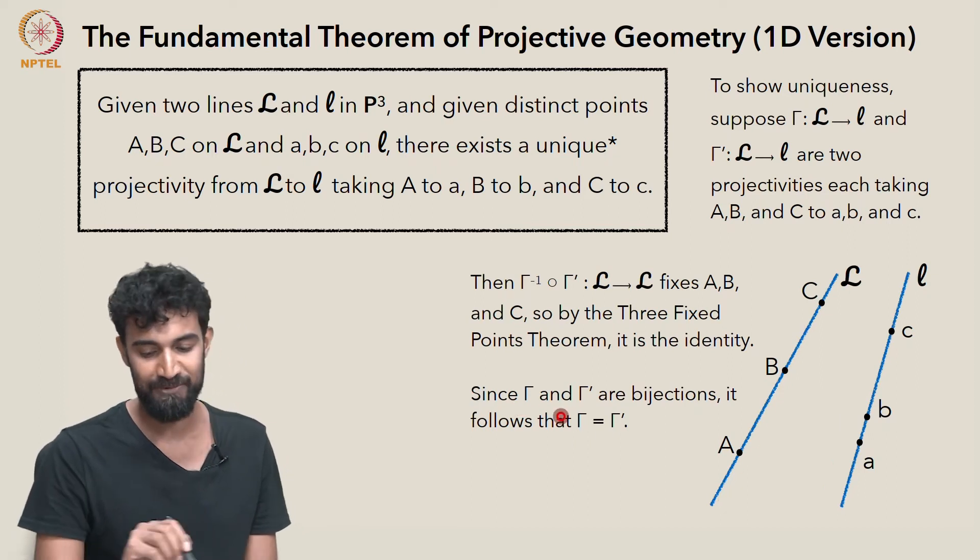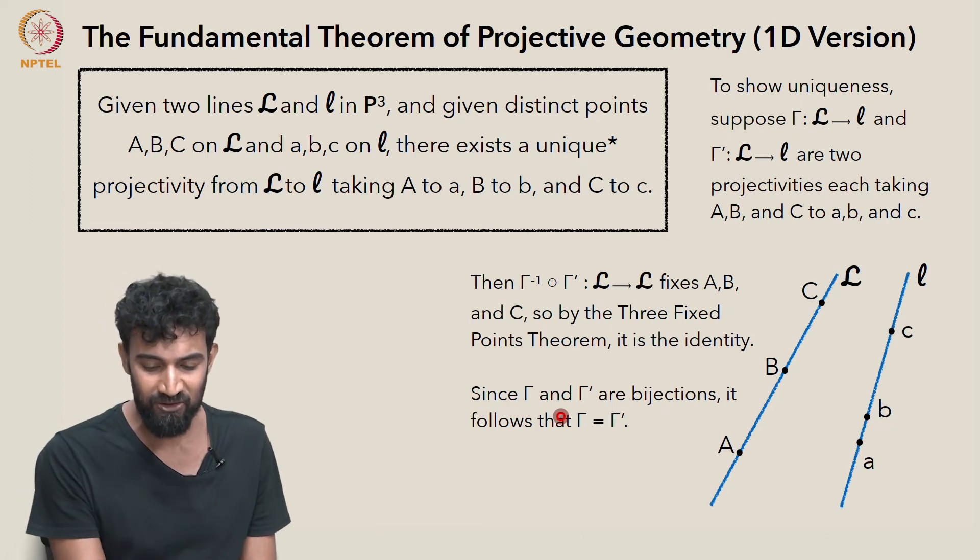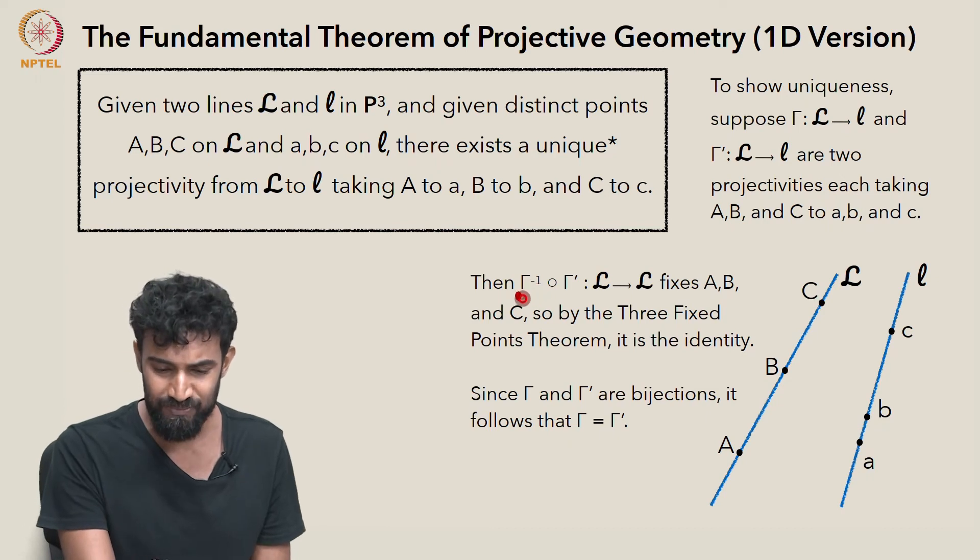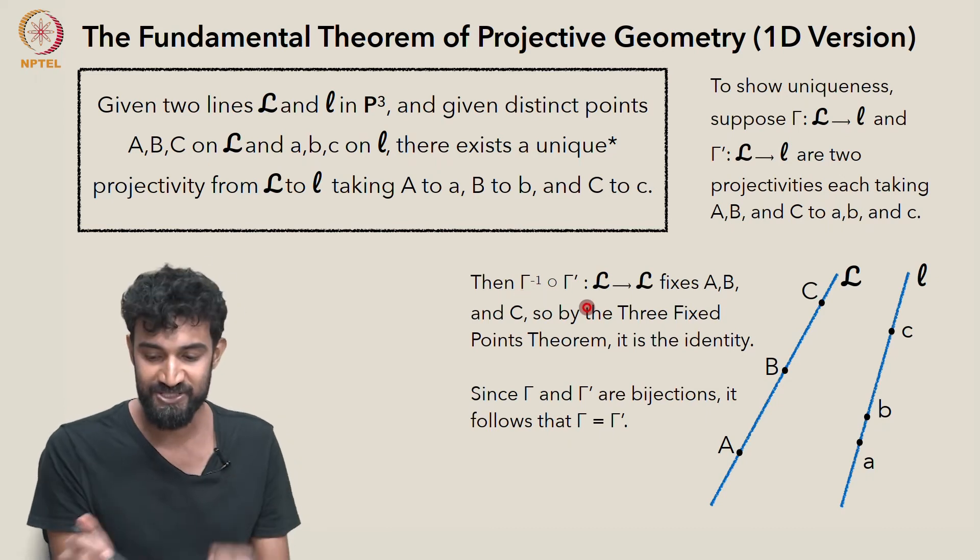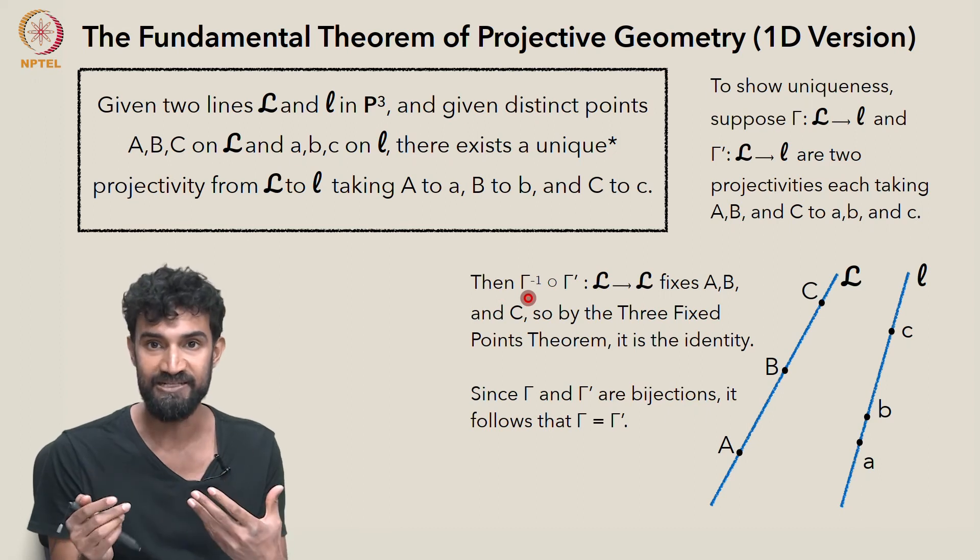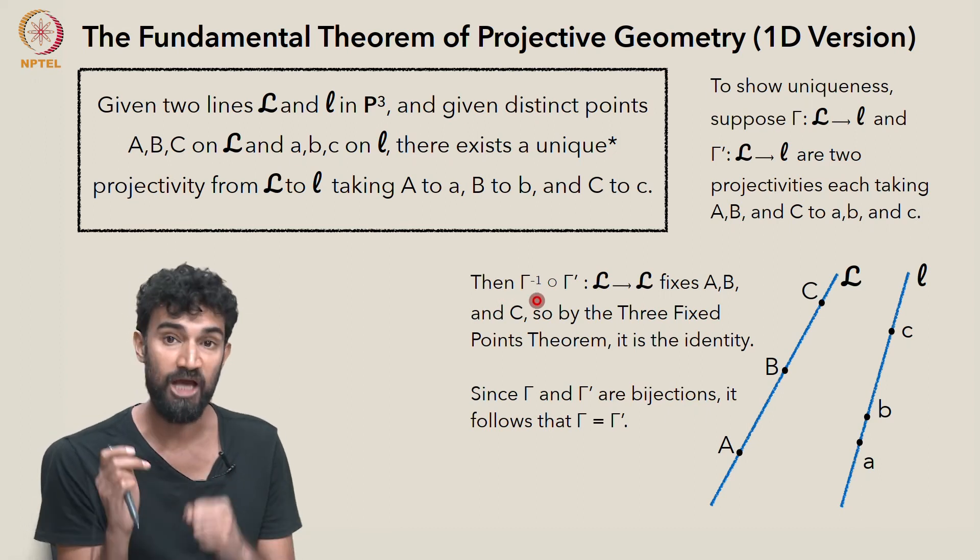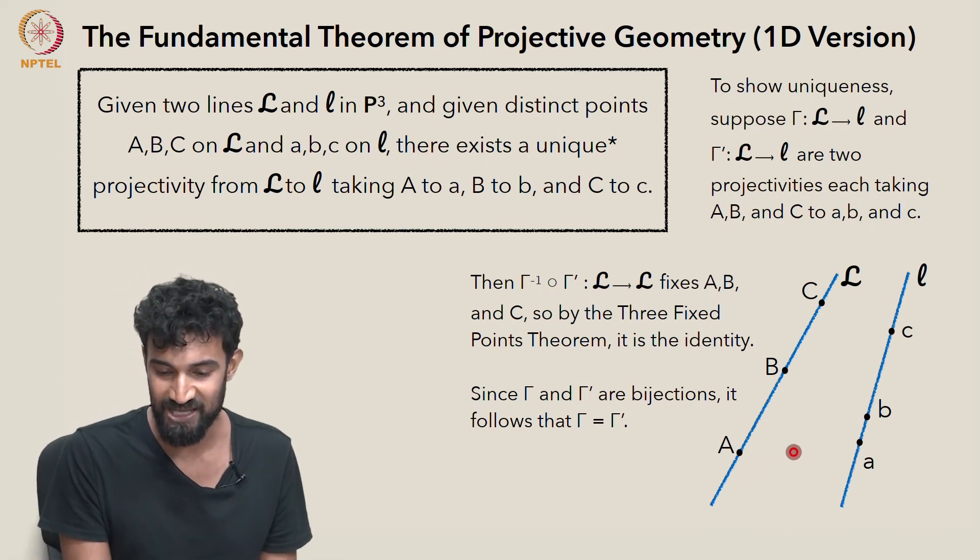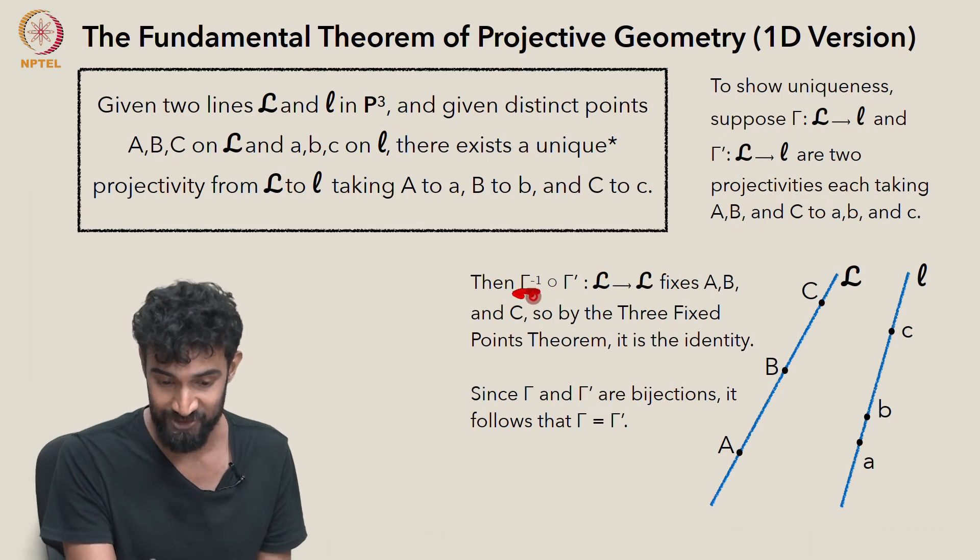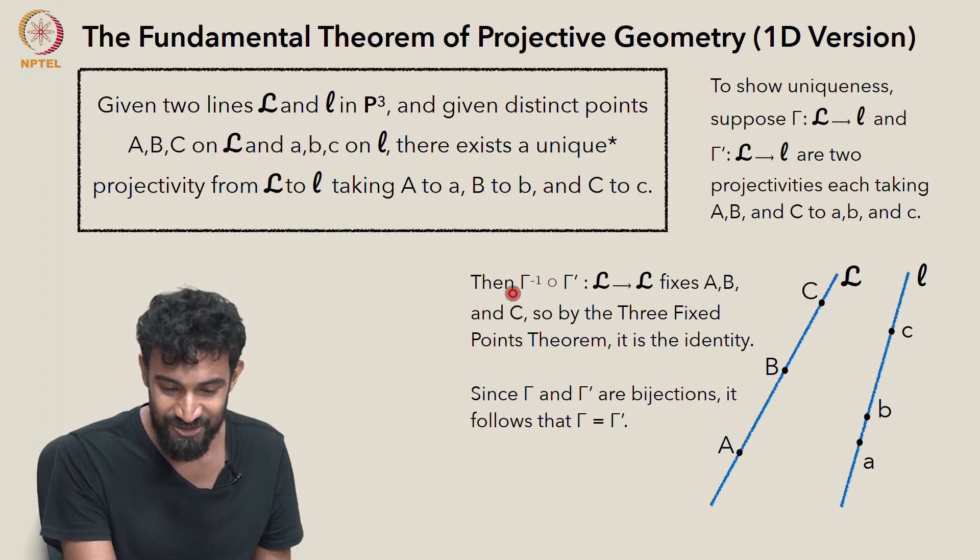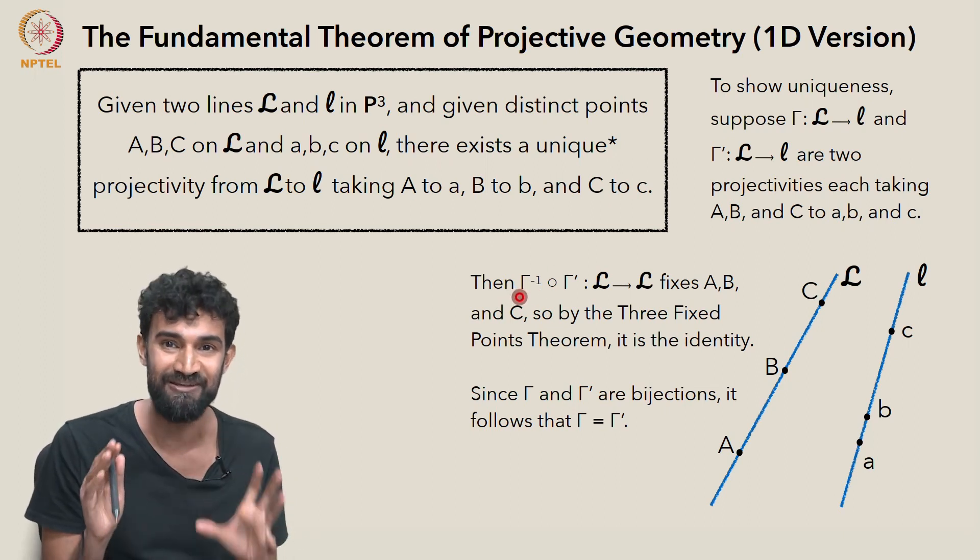Now, since gamma and gamma prime are both bijections, it follows that they have to be equal. Another way to think about it, gamma and gamma prime are two maps from capital L to little l. Now, if we do gamma prime and then followed by gamma inverse, we're getting the identity. Gamma inverse is literally undoing everything that gamma prime did. So the fact that it's gamma inverse, but gamma inverse is also the inverse of gamma. It also undoes everything gamma does. So as a result, gamma had to be equal to gamma prime in the first place.